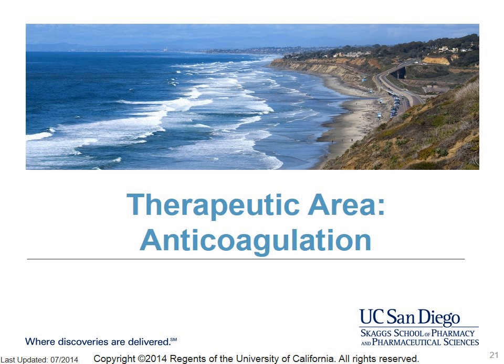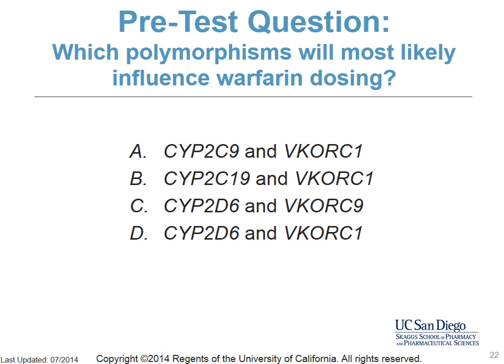The third example of pharmacogenomic testing is from the area of anticoagulation. Which polymorphisms will most likely influence warfarin dosing? Options are: A, CYP2C9 and VKORC1; B, CYP2C19 and VKORC1; C, CYP2D6 and VKORC9; or D, CYP2D6 and VKORC1.